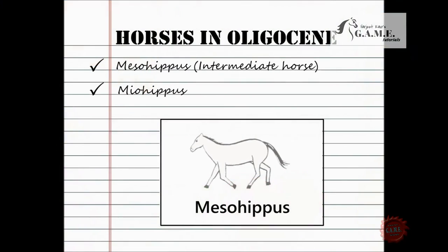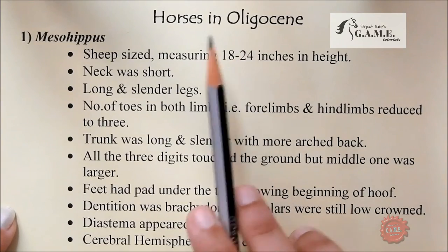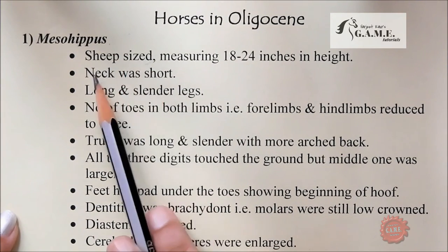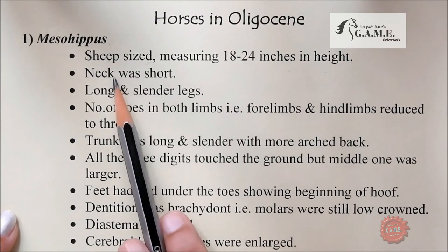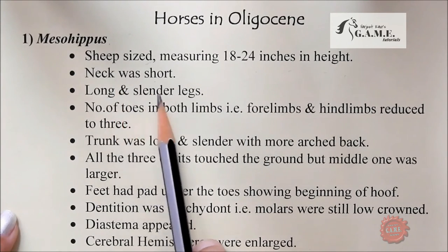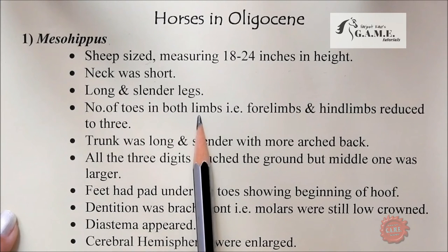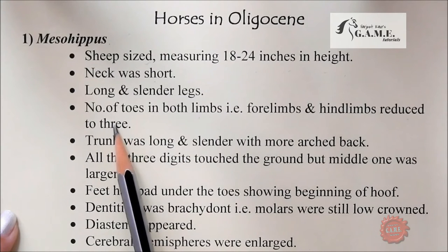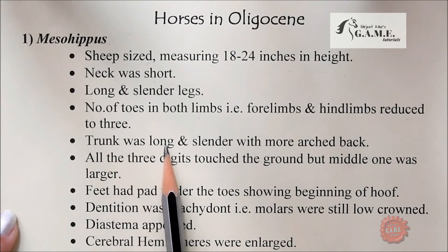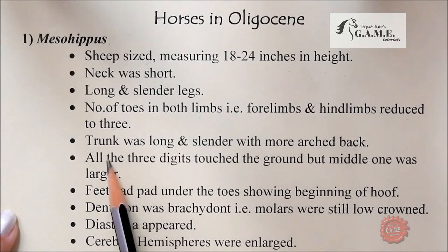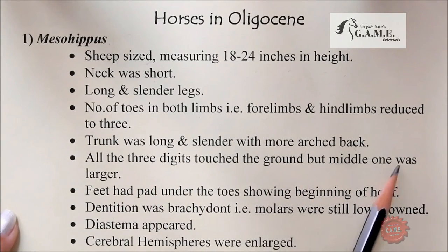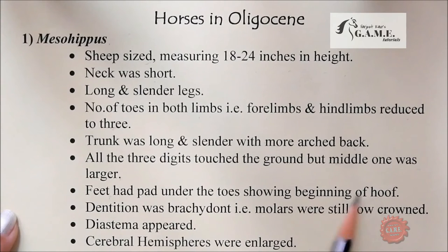For the Oligocene we have Mesohippus, which was sheep-sized, measuring 18 to 24 inches in height. Neck was short, legs long and slender. Number of toes in both forelimbs and hind limbs reduced to three. Trunk was long and slender with a more arched back. All three digits touched the ground but the middle one was larger. Feet had pads under the toes, showing the beginning of a hoof. Dentition was brachydont — molars were still low-crowned. Diastema appeared and cerebral hemispheres were enlarged.